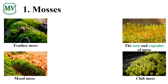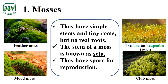Look at these plants. Do you know their names? Terrific! Mosses are non-flowering plants. They have spores in their capsules for reproduction. Where do you usually find them? Good job! They usually grow on rocks, trunk of trees, and walls of buildings. Let's have another example.